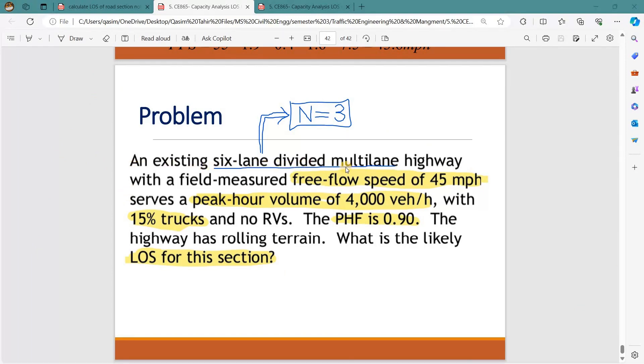six-lane divided multilane highway, which means the number of lanes in one direction is 3, with a free-flow speed of 45 mph, serves a peak-hour volume of 4,000 vehicles per hour with 15% trucks and no RVs (no recreational vehicles present). The peak hour factor is 0.90. The highway has rolling terrain. What is the likely LOS for this section?